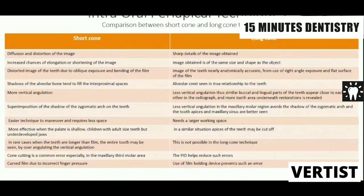Let's compare the short cone and the long cone techniques. With the short cone, diffusion and distortion of the image occurs; with the long cone, you get sharp details. The short cone has increased chances of elongation, whereas with the long cone the image is obtained in the same size and shape as the object. The short cone gives a distorted image due to oblique exposure and bending of the film; the long cone image is nearly and naturally accurate.